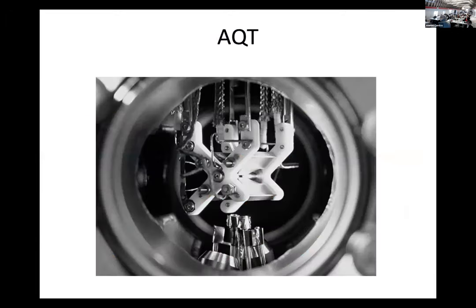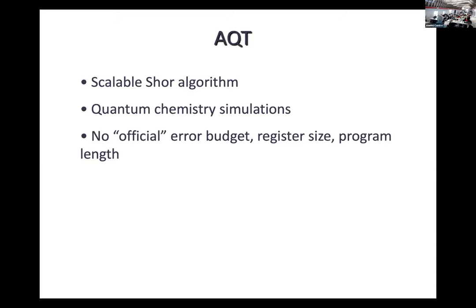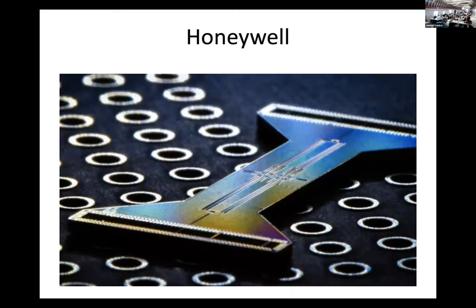AQT — the Innsbruck startup — lists an image of a relatively old technology: a workhorse linear trap at Innsbruck. Personally, I don't have information about their gate fidelities. They list scalable short quantum algorithms and quantum chemistry simulations as accomplishments, but no official error budget.